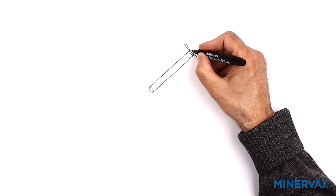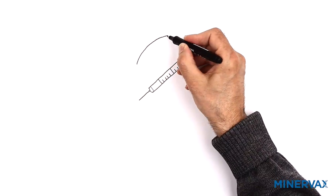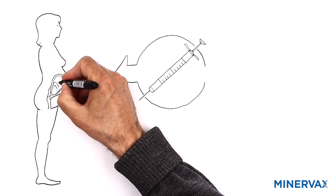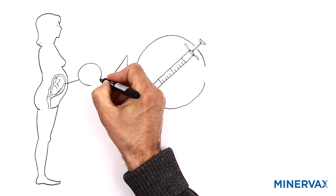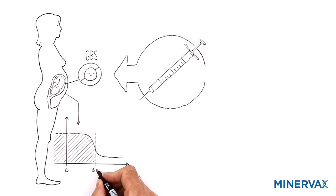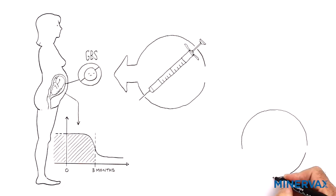In summary, a protective GBS vaccine for pregnant women will be able to help protect both against stillbirth and preterm delivery caused by GBS and life-threatening GBS infections in newborn babies in the first months of life.